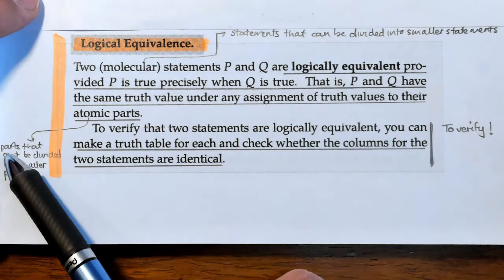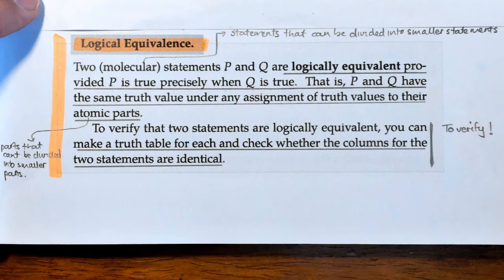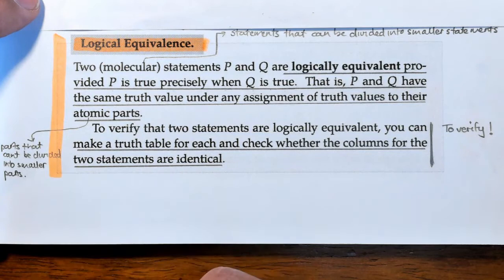Now remember the atomic parts, it's parts that can't be divided into smaller parts. Like the atom in chemistry, it is the smallest part. So it can't be subdivided into even smaller parts.